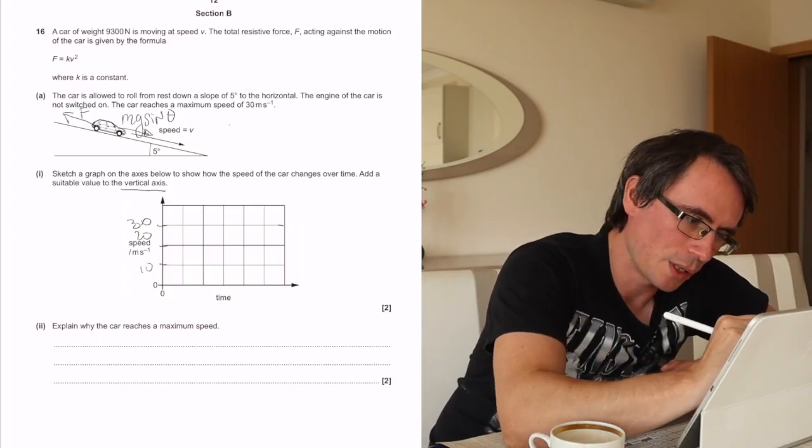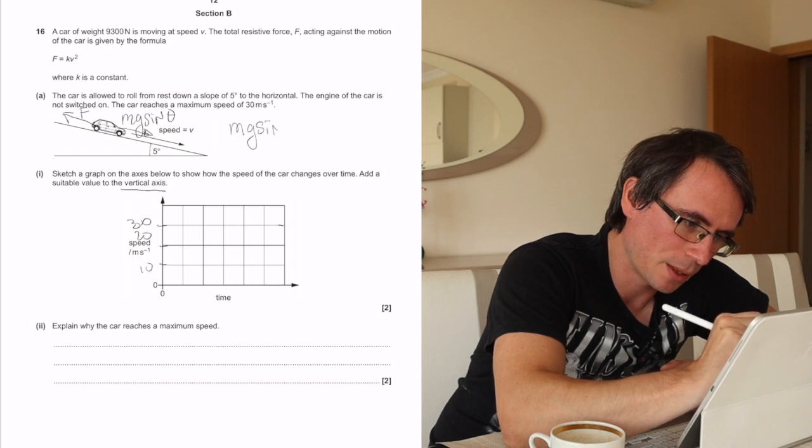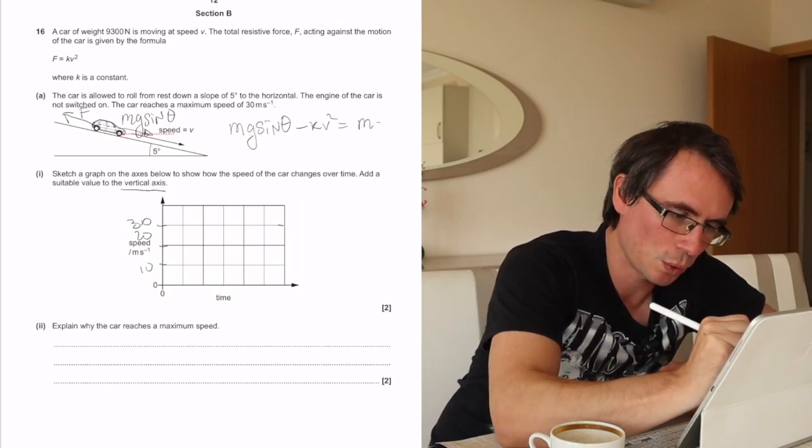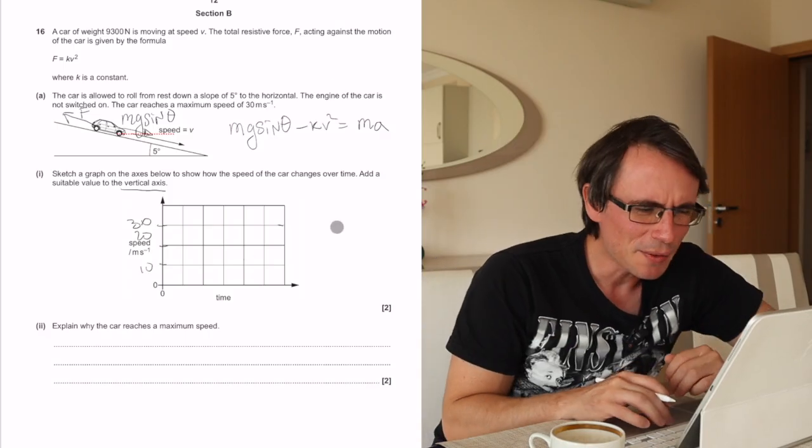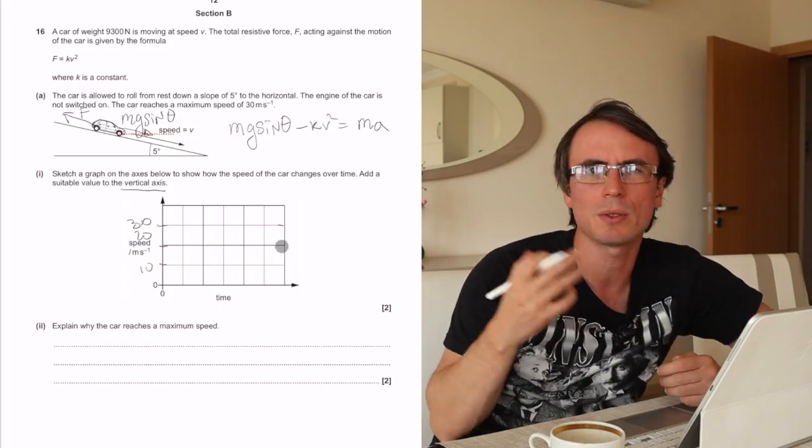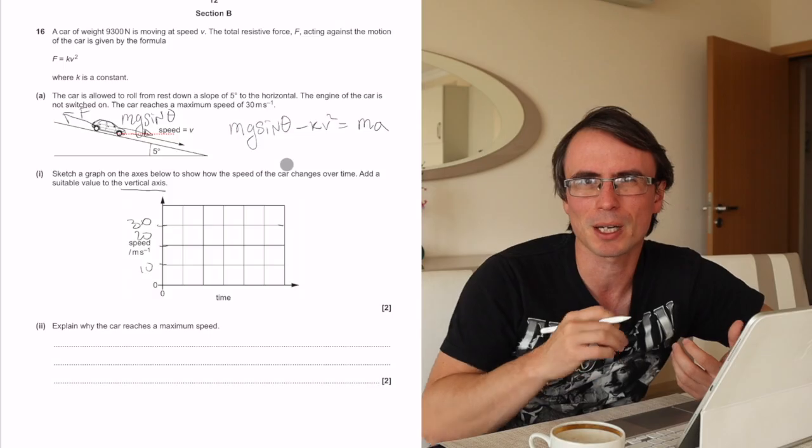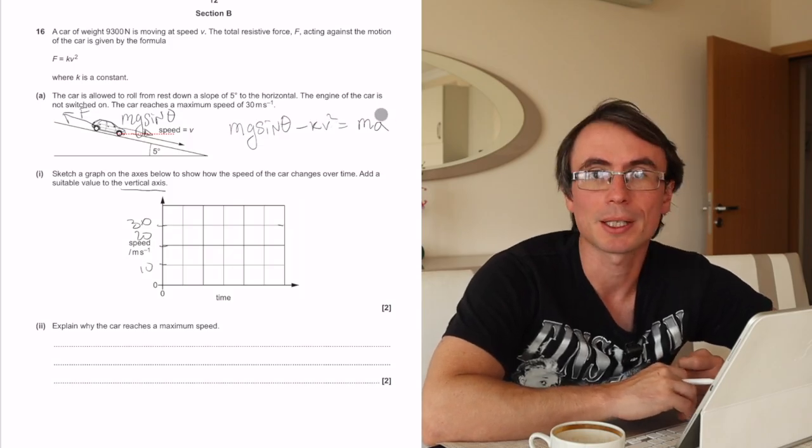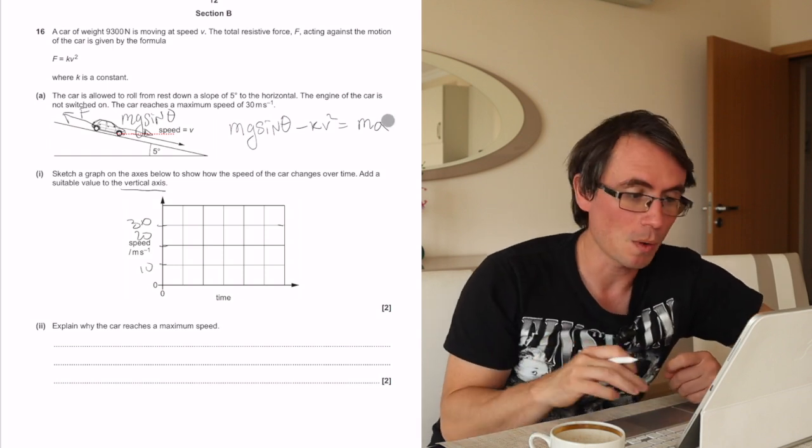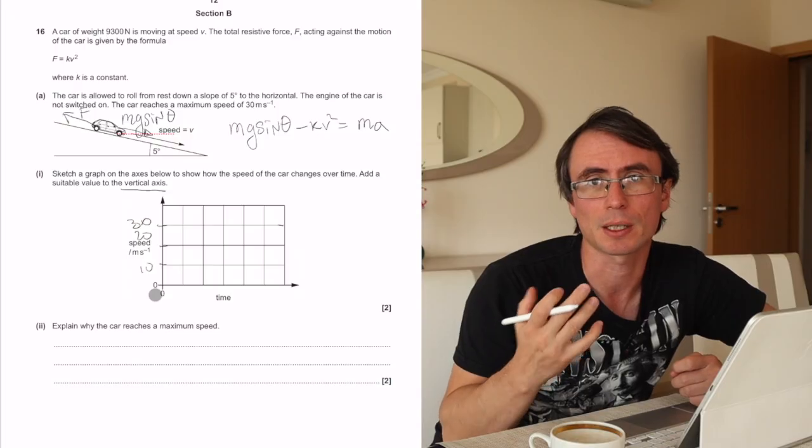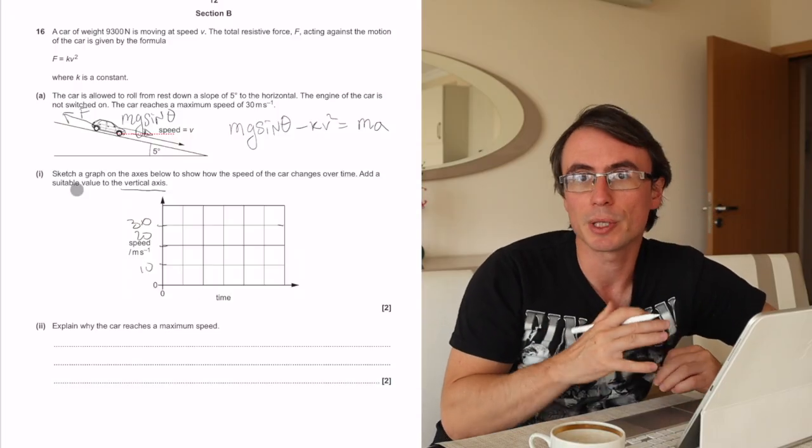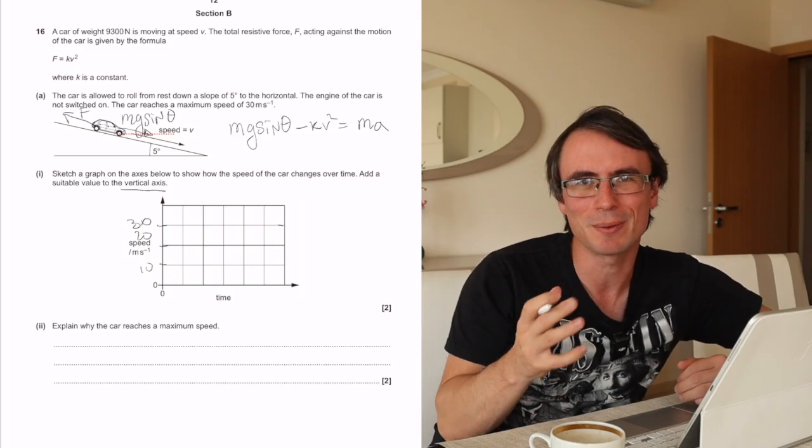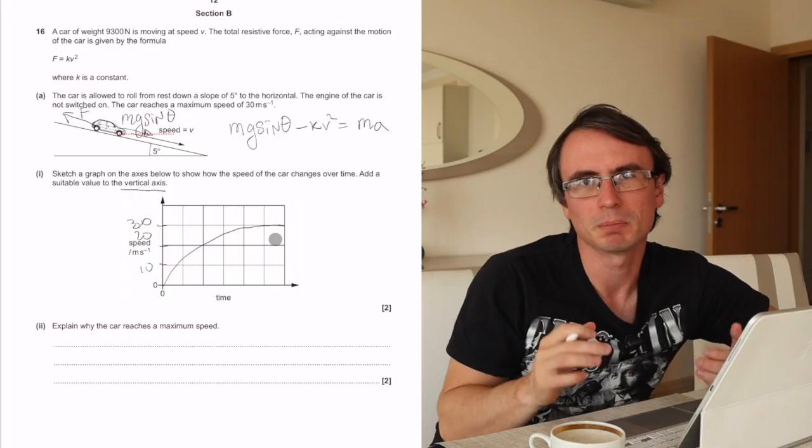Let's say this here is going to be 10, this is 20, this is 30 meters per second. To sketch this, we really need to know what's happening to the speed of the car, in other words, the acceleration. mg sine theta take away the drag force kv squared equals mass times acceleration. This is Newton's second law. As the car speeds up, this term becomes bigger and bigger, and the acceleration becomes smaller and smaller. If the acceleration is becoming smaller, the gradient of this graph will be decreasing. Note that we only need to add values to the vertical axis and don't have to worry about the time axis. Be reading the question really, really carefully.